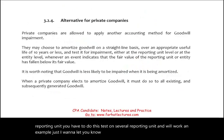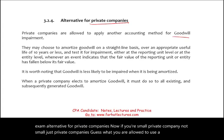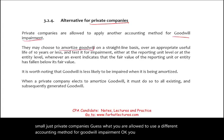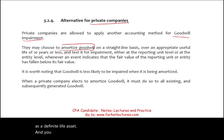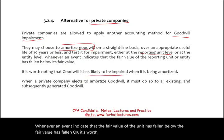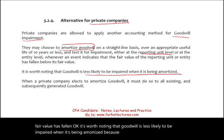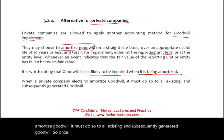A small exception that could appear on the CPA exam: there is an alternative for private companies. Private companies may choose to amortize goodwill on a straight-line basis over an appropriate useful life, treating goodwill as a definite life asset. They can test for impairment at either the reporting level or the entity level whenever an event indicates the fair value has fallen. Goodwill is less likely to be impaired when amortized because you are constantly reducing it. When a private company elects to amortize goodwill, it must apply that method to all existing and subsequently generated goodwill.